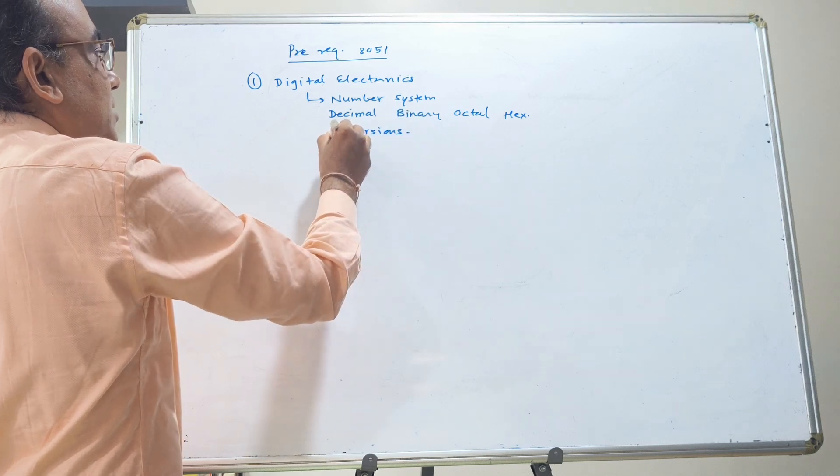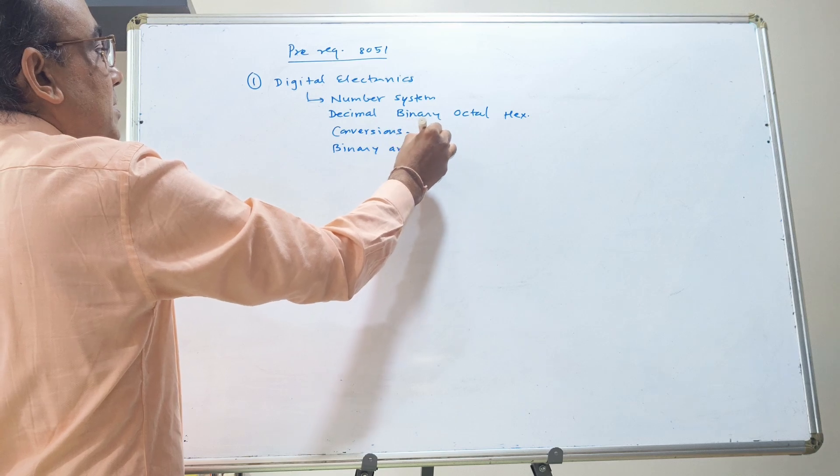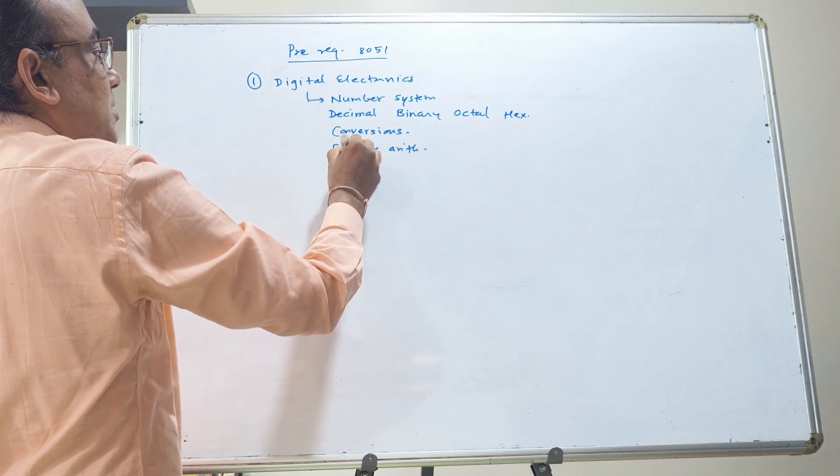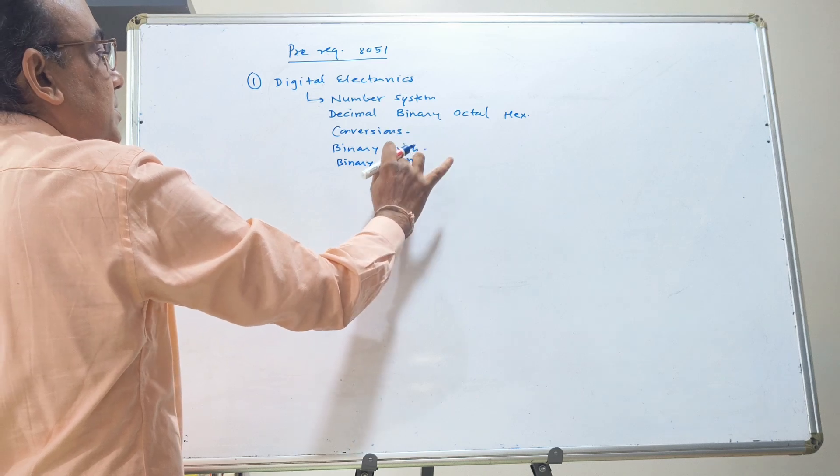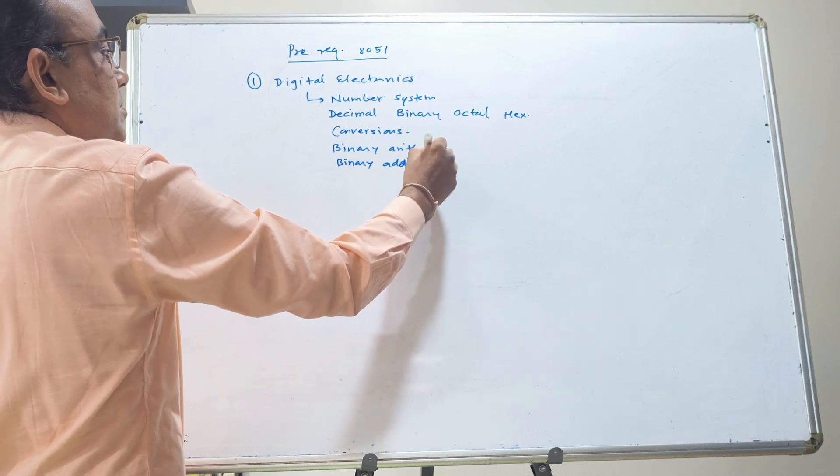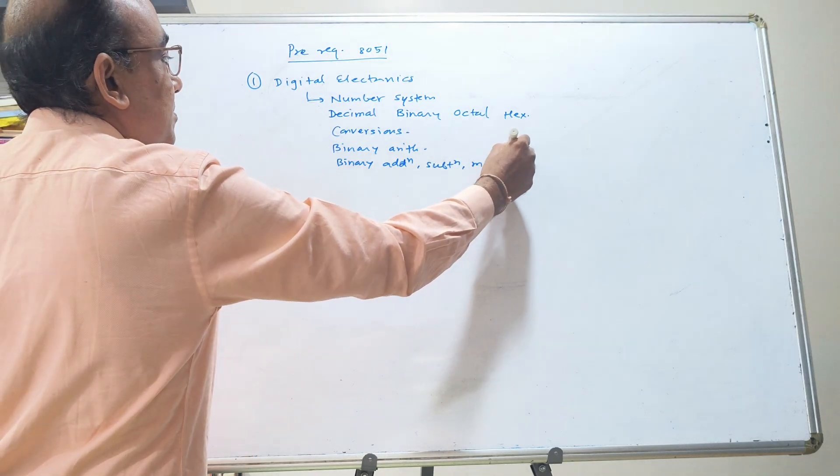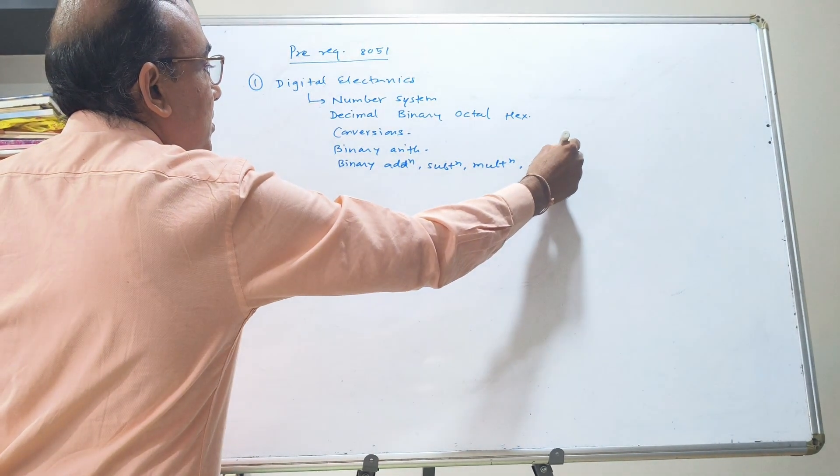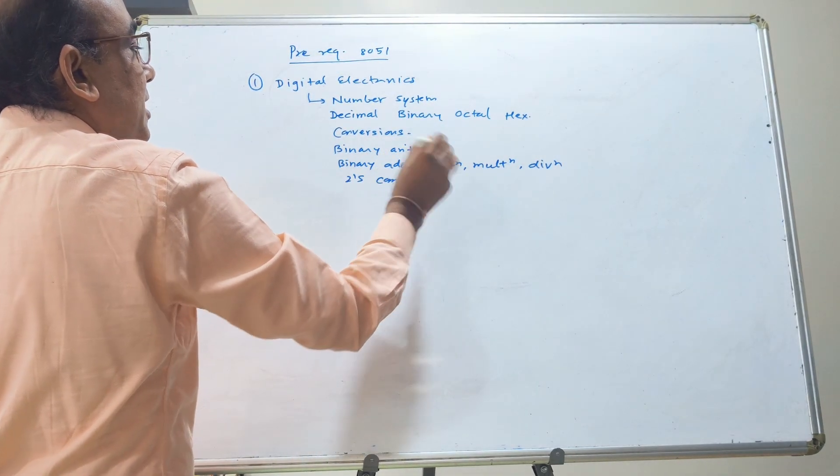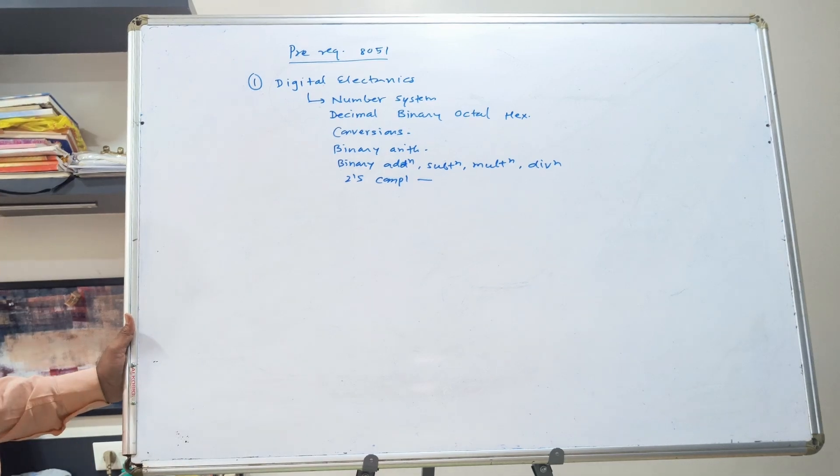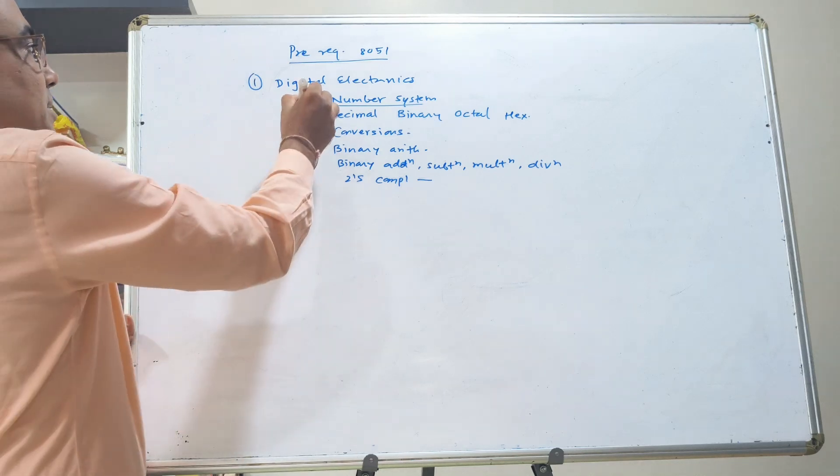Then you should know the binary arithmetic. Binary addition, subtraction, multiplication, division, two's complement method of subtraction. All these things are part of number system.